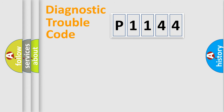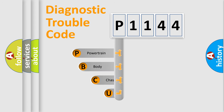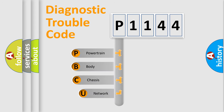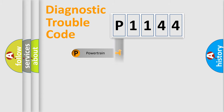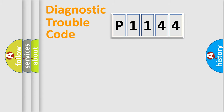Let's look at the history of diagnostic fault code composition according to the OBD2 protocol, which is unified for all automakers since 2000. We divide the electric system of an automobile into four basic units: Powertrain, Body, Chassis, and Network.